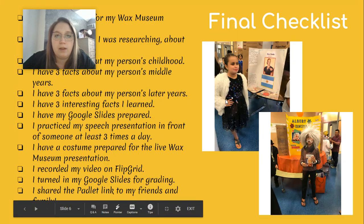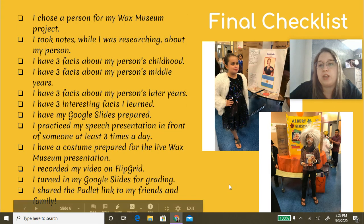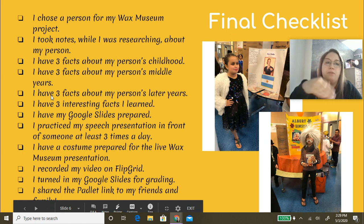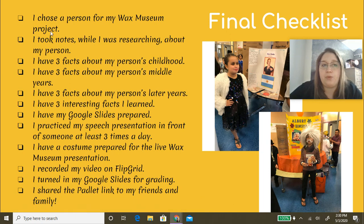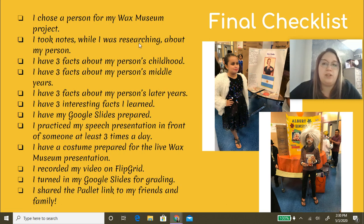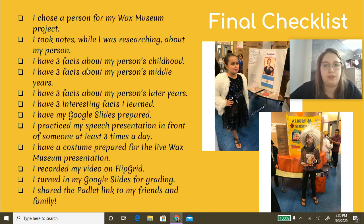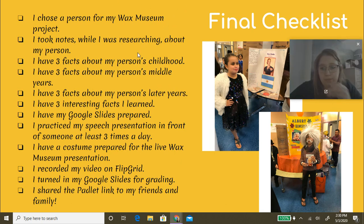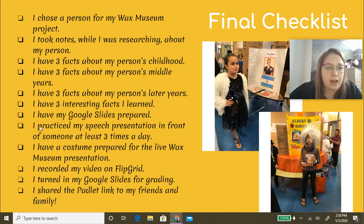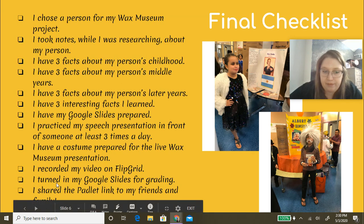The last slide has a final checklist for you. When you're all done and ready to record on recording day, make sure you have everything you need. The checklist includes: chose a person for the wax museum, took notes while researching — it might be good to use your ELA notebook for that — three facts about childhood, middle years, later years, and interesting facts. Google slides prepared. I have practiced my speech in front of someone at least three times. I have a costume prepared for the virtual wax museum. I recorded my video in Flipgrid. I turned in my slides for grading. And I shared the Padlet link with friends and family.